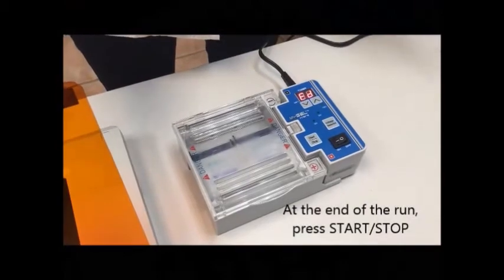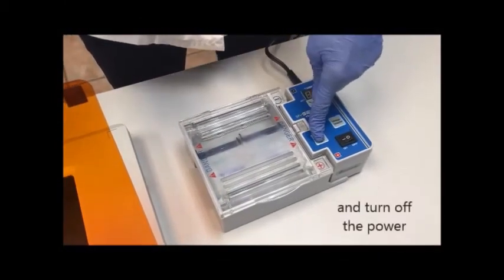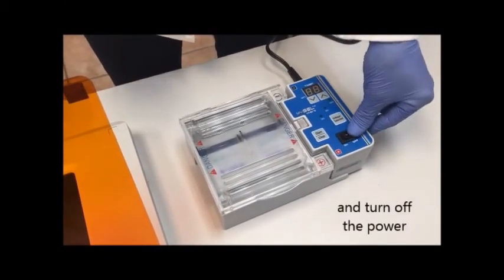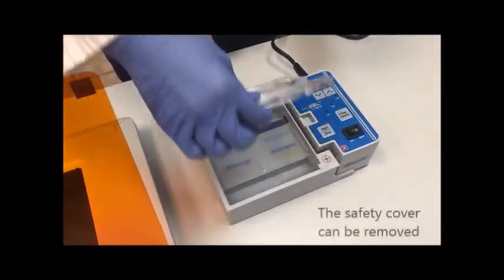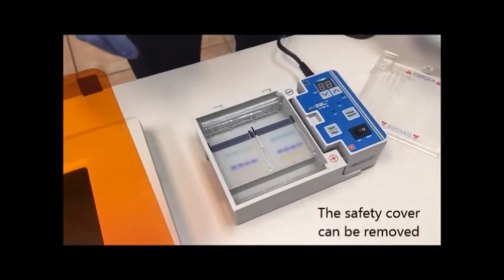At the end of the run, press the start stop button and turn off the electrical power. You can now remove the lid and remove your gels.